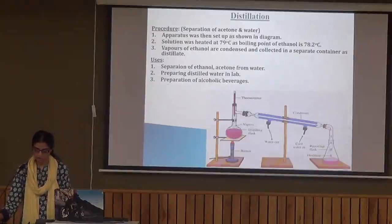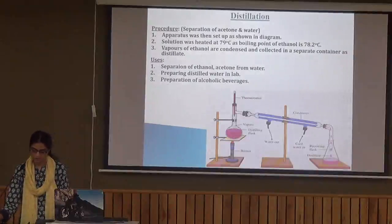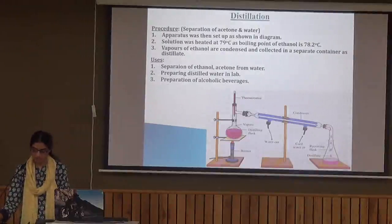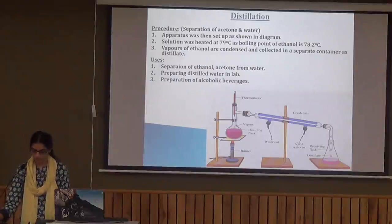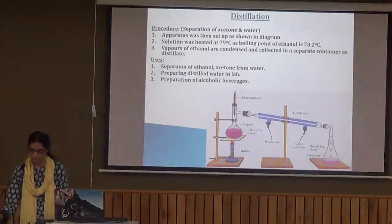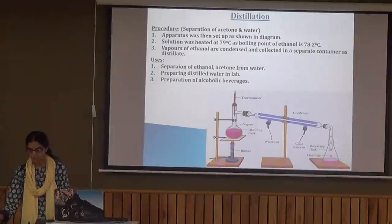The diagrammatic setup for distillation shows how we maintain the temperature using a thermometer, a condenser for cooling the vapors formed, and a receiving flask for collecting the components separately.